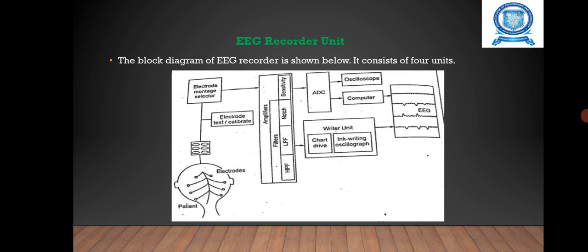Usage of writer unit: it is usually of the ink type direct writing recorder. The best type of pen motors used for EEG have a frequency response of about 90 Hz.